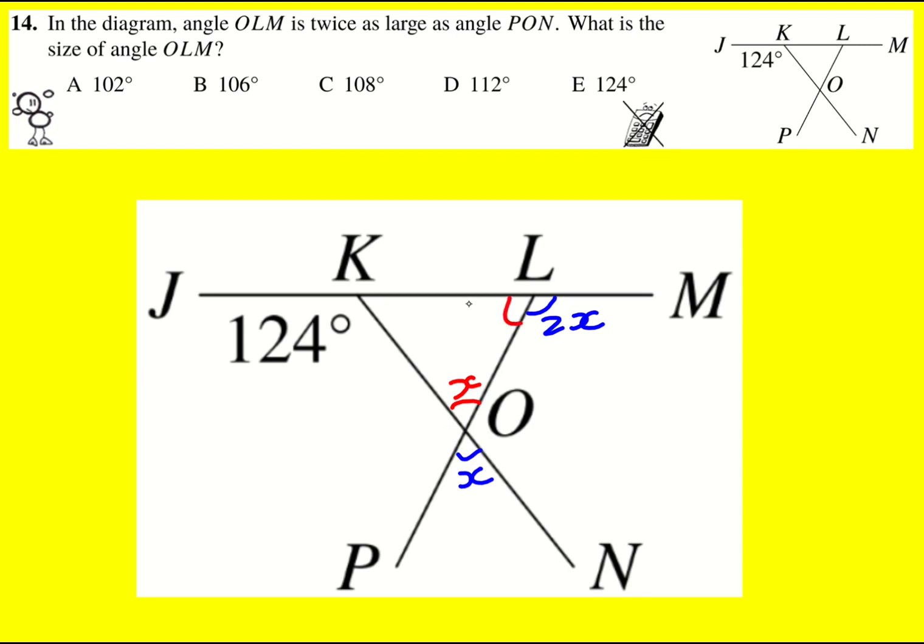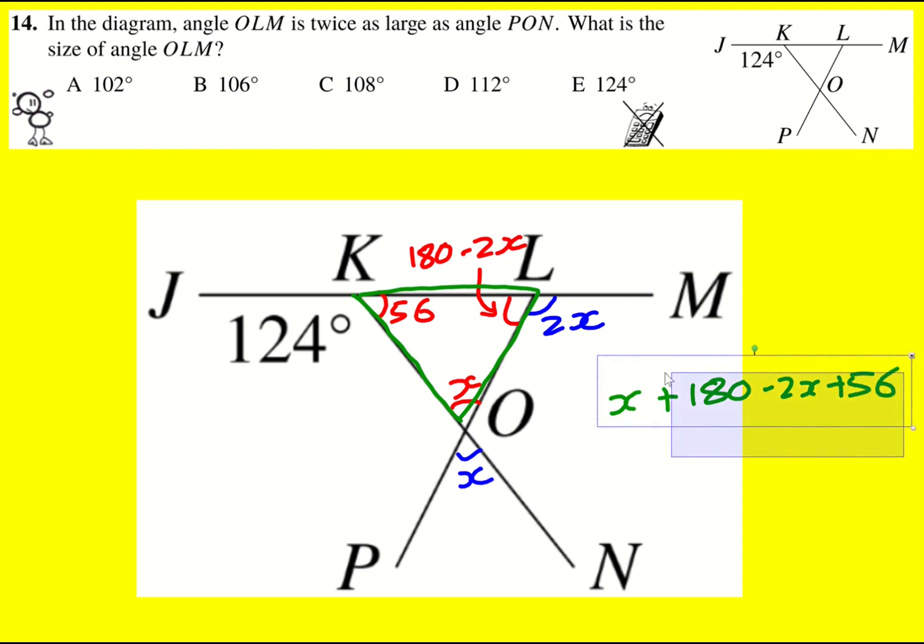Angles on a straight line add up to 180. So this angle here in red is going to be 180 minus 2X. And then I'm also going to work out this one: 180 minus 124, that's 56. That's really useful information because I can look at this triangle and the angles in it must add up to 180. So X plus 180 minus 2X plus 56 must equal 180.